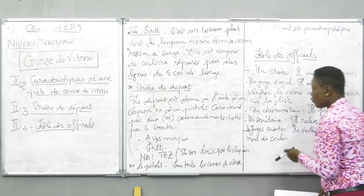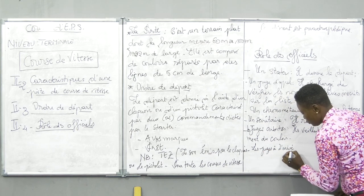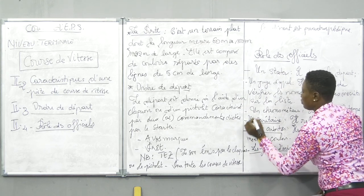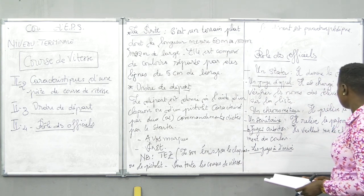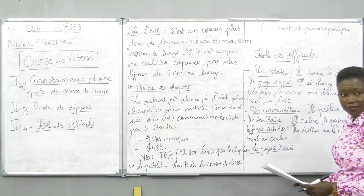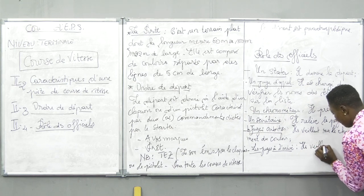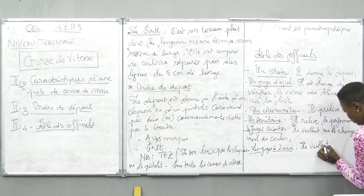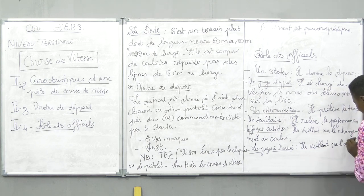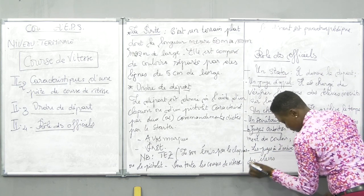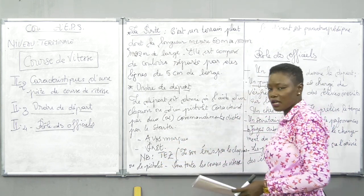Nous avons les juges à l'arrivée — à ne pas confondre avec les juges arbitres. Les juges à l'arrivée veillent sur l'arrivée des élèves. À partir de là, vous avez le rôle de chaque officiel sur la piste de 100 mètres.